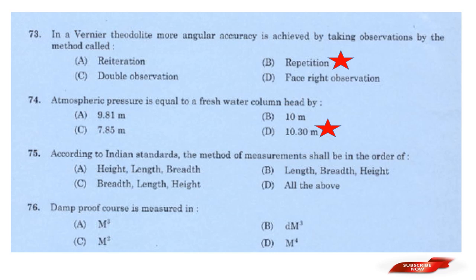Question: According to Indian standards, the method of measurement shall be in order of? Options: Height, length, breadth; Length, height, breadth; Length, breadth, height; Breadth, length, height. Answer: Option B — Length, breadth, height. Damp proof course is measured in m².